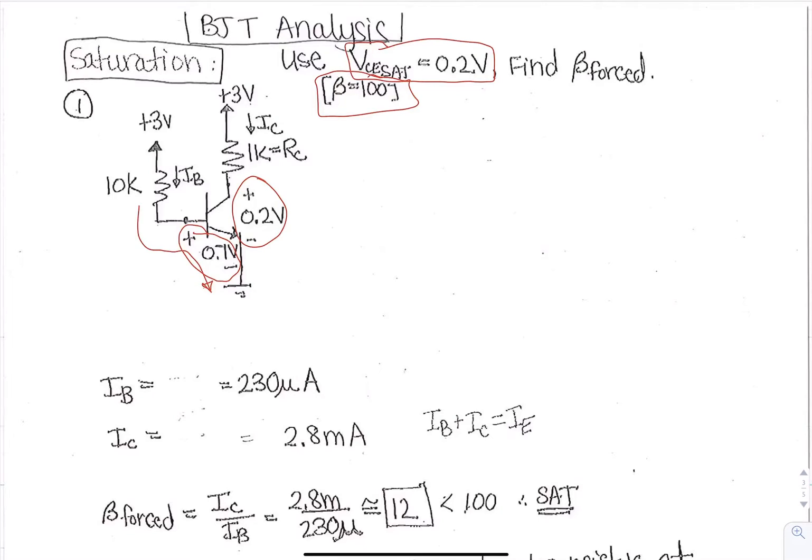So the base to emitter is going to be a plus and then a minus and a minus, so plus 3 minus IB times 10k minus 0.7 equals 0, and the easiest is we already have that VE is equal to 0.